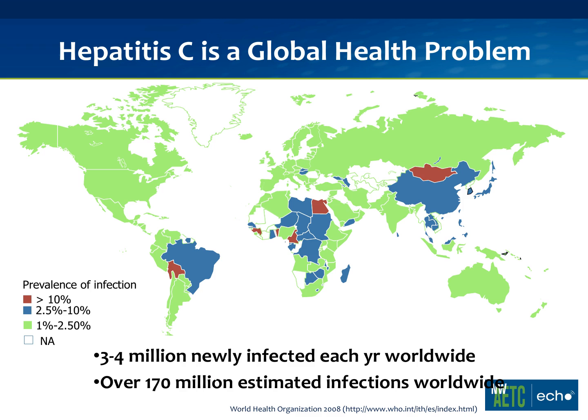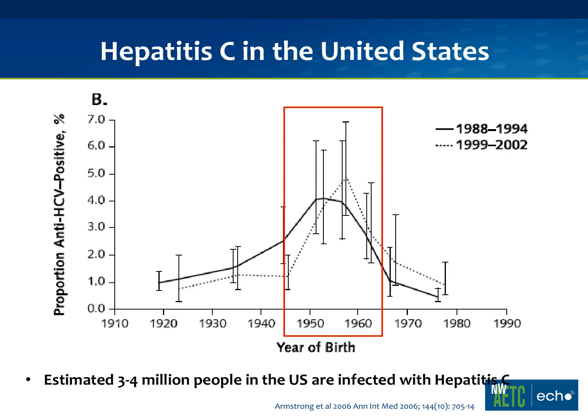In Egypt it tends to be genotype 4, and sadly nosocomial spread continues — they don't dispose of medical waste properly there, so still 60% of new infections in Egypt are nosocomial. Mongolia is another area with a lot of hepatitis B and hepatitis D as well. The last area relevant for the Pacific Northwest is Southeast Asia — about 10% of my patients come from Vietnam or Southeast Asia, where there's a very high prevalence. The United States is actually considered a lower prevalence country compared to the rest of the world.